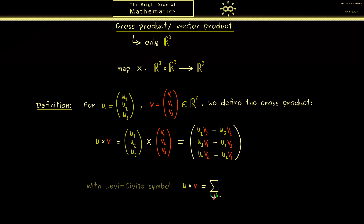All indices run from one to three. The formula uses the Levi-Civita symbol written as epsilon i,j,k, then the i-th component of u and the j-th component of v. We also multiply with the canonical unit vector e_k. This is important because only this vector makes the whole sum a vector again. This formula is also nice to remember because i, j, k come in the correct order. Of course the result is the same as the component form above, and for some proofs it's easier to use the Levi-Civita symbol.